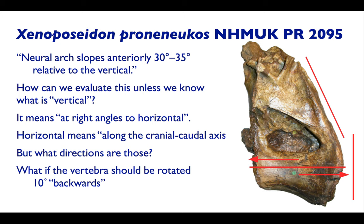Suppose the true horizontal position is 10 degrees out from what I thought. Suppose the vertebra should be rotated backwards — then that diagnostic character is only that the arch slopes anteriorly 20 to 25 degrees. One of the reviewers of that paper argues this is the correct position, and that became a discussion between me and him that was not based on any objective facts, but just our sense of how we thought it looked most horizontal. We want to do better than that.